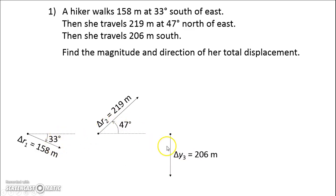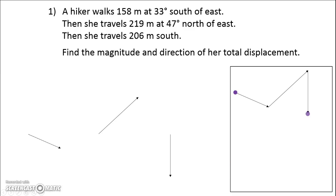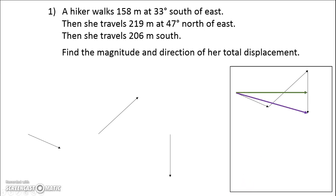We need to add these three displacements together. How do we add them? We know how to add vectors — we draw them tip to tail. You do the first, and that tip connects to the tail of the next, and then you connect the tip of that to the tail of the next. The resultant or total displacement starts at the very beginning and ends at the very end. So we're getting close: this total displacement is two-dimensional, and it has an X component and a Y component.